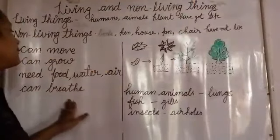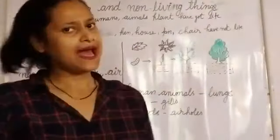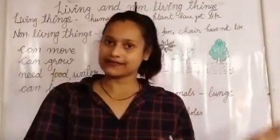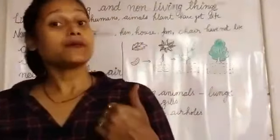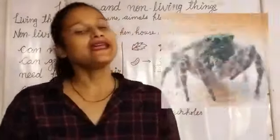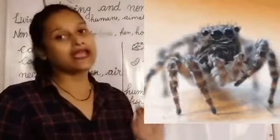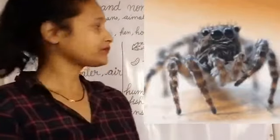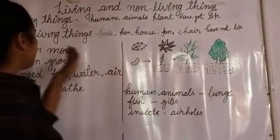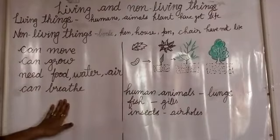Next, living things can breathe. All living things breathe. Human beings and animals breathe through their lungs. Fish breathe through their gills. Insects breathe through their air holes. This way, living things can move, grow, need food, water and air, and breathe.